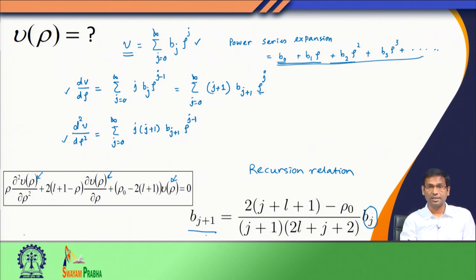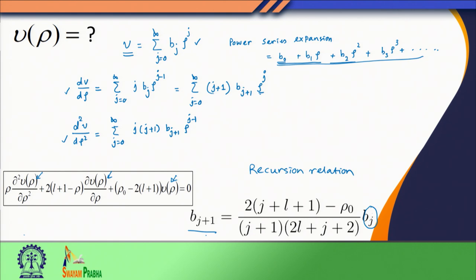In today's class we have come to this point in the quantum mechanical solution of the hydrogen atom, arriving at the recursion relation. We will continue our discussion in the next class by looking further at the solution of this radial wave equation. Thank you for your attention.